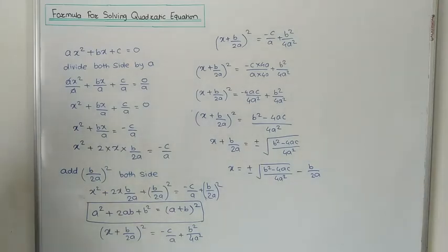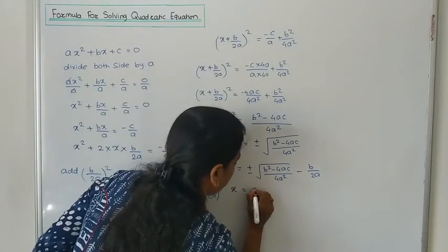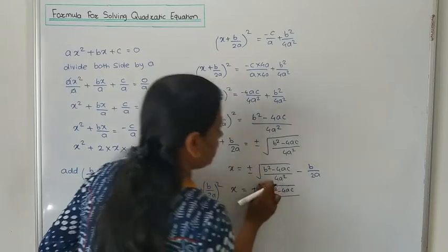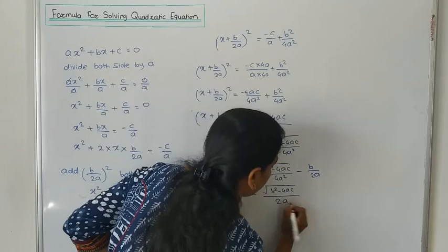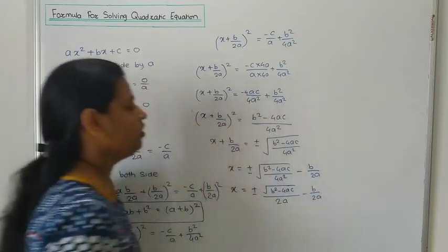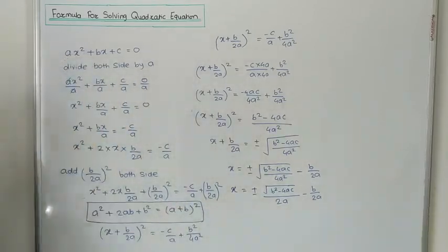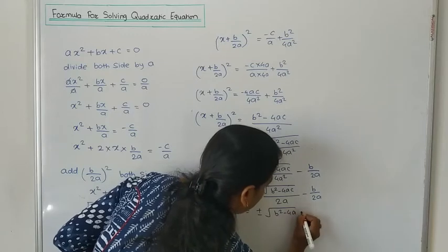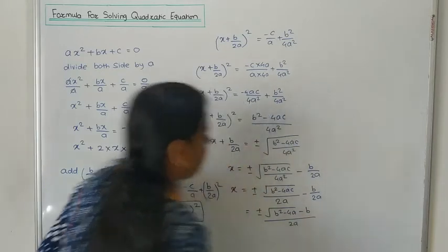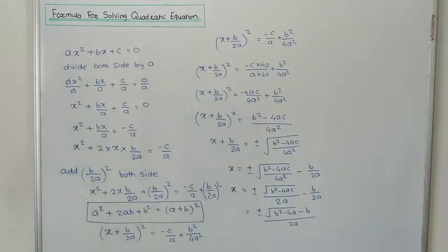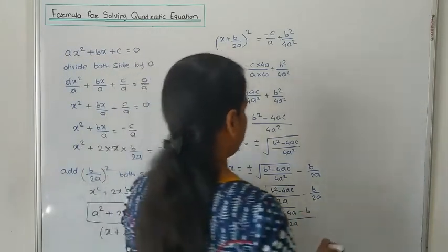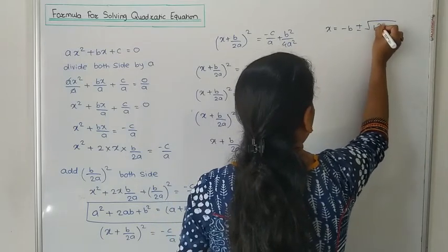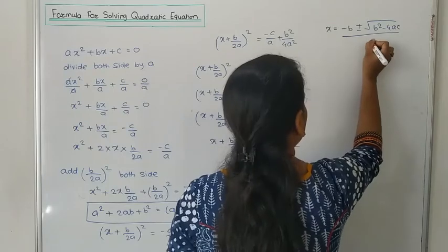Now separate the root sign for numerator. The square root of 4 is 2, and the square root of A² is A. So the denominator becomes 2A. The denominators are the same, so we perform direct combination: X = [±√(B² - 4AC) - B] / 2A. Therefore, X = (-B ± √(B² - 4AC)) / 2A.